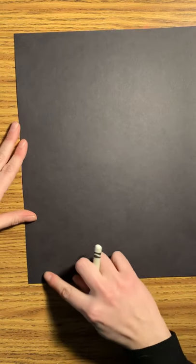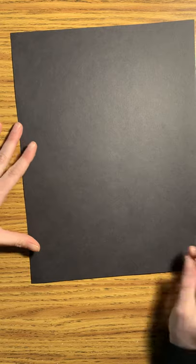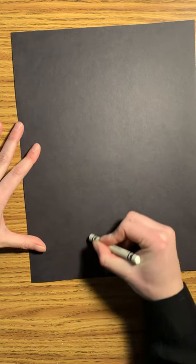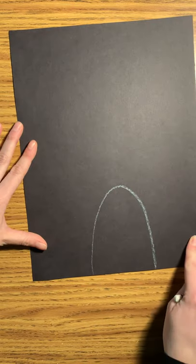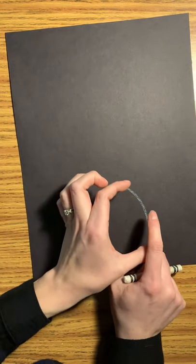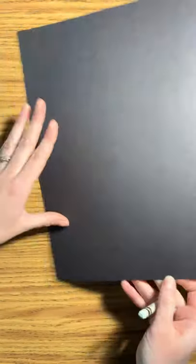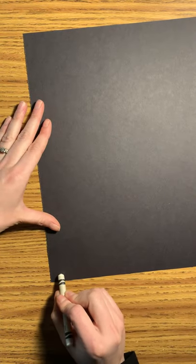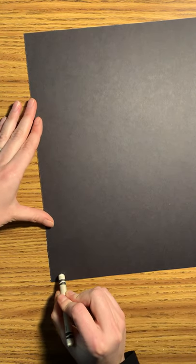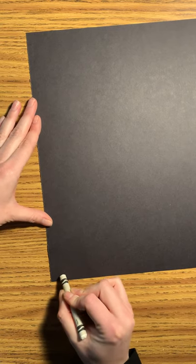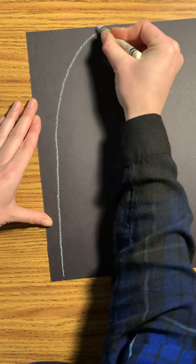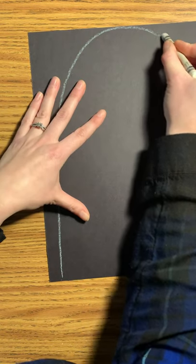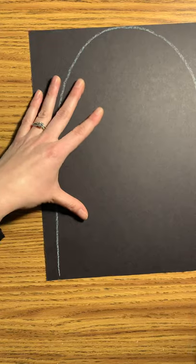We need to do an upside down U, but second graders, if you do a U like this, well that is wasting all of this black paper and that makes your penguin this big. That's a tiny little penguin. So when you do your upside down U you need to start from this corner and go all the way up to the top and then go to the side and down to the other corner. That makes a really nice big huge penguin.